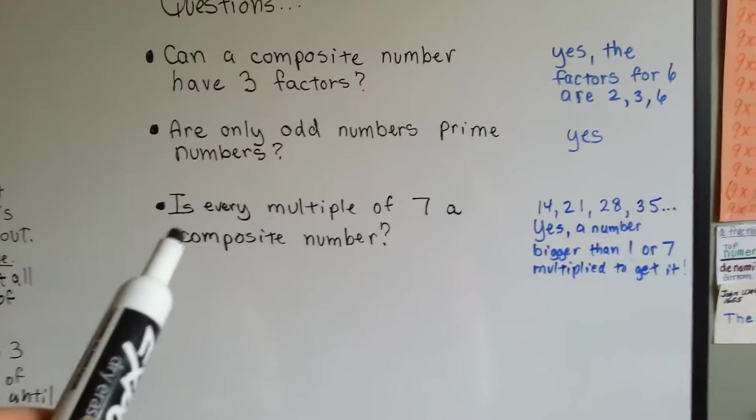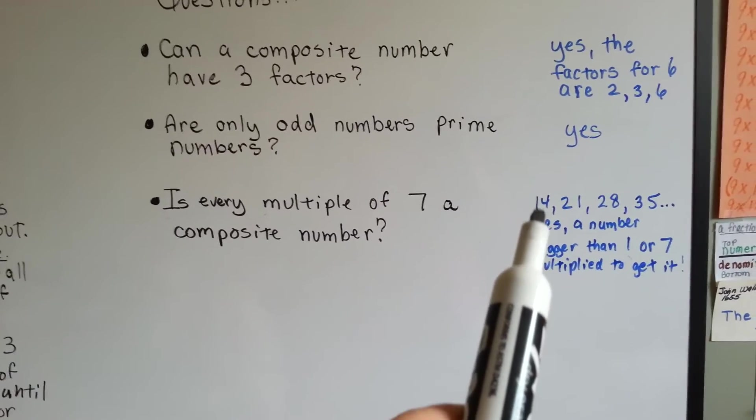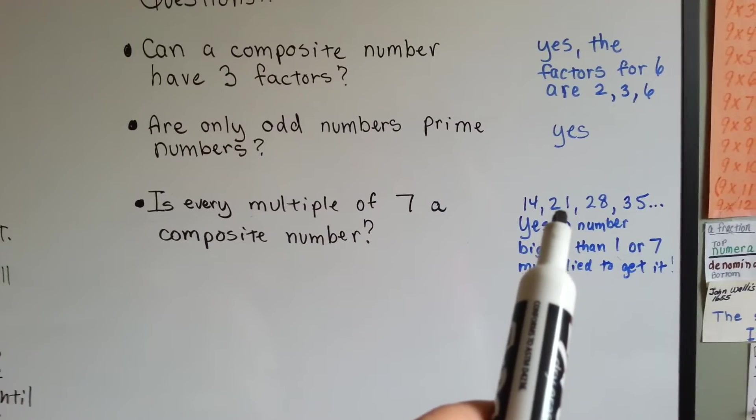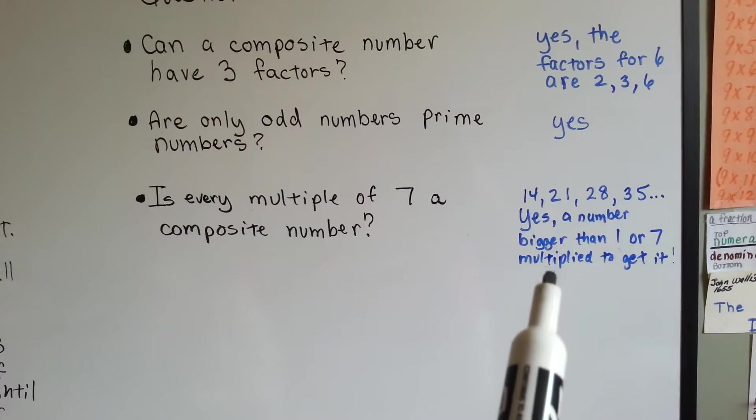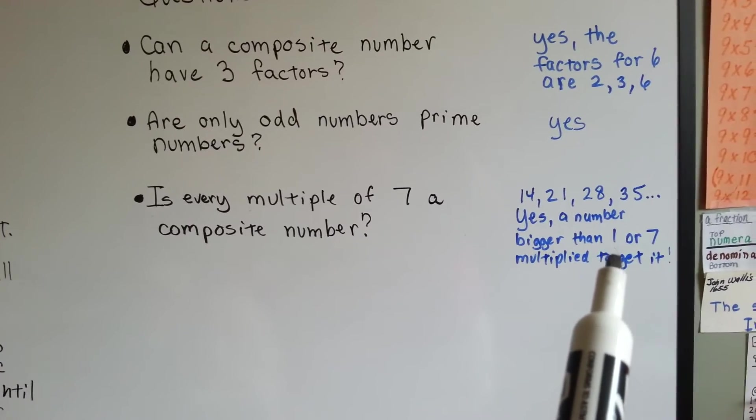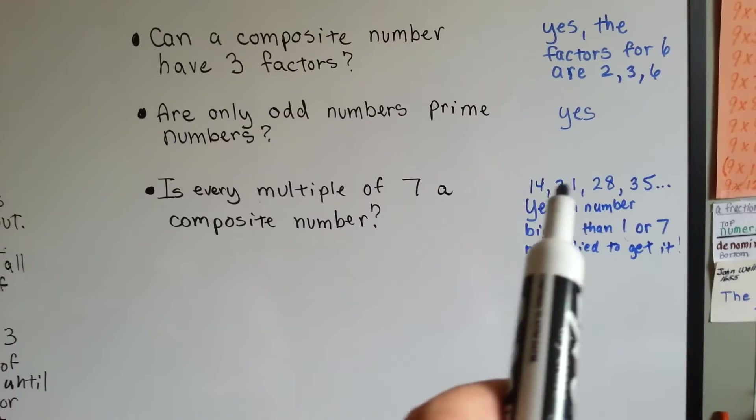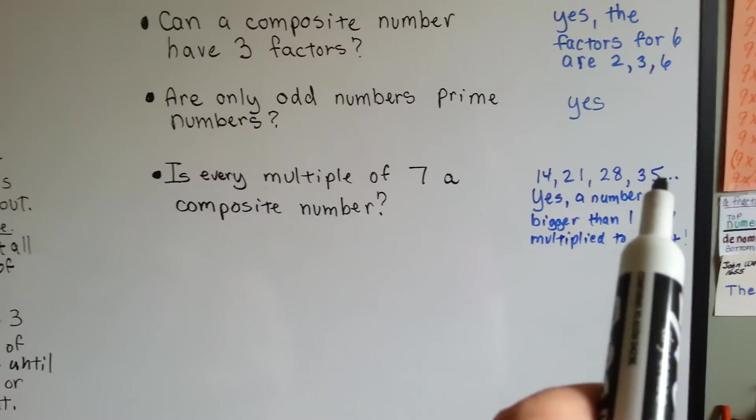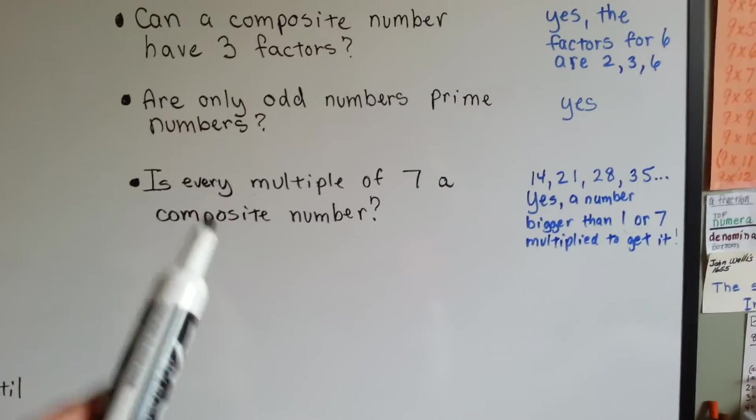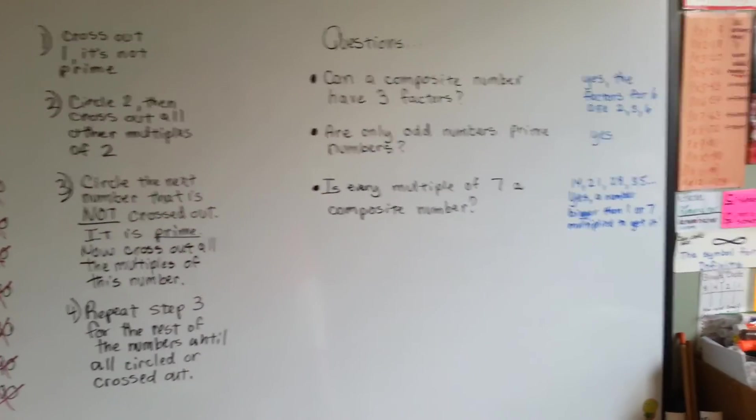Is every multiple of 7 a composite number? Well, 2 times 7 is 14, then 21, then 28, then 35. Yes, a number bigger than 1 or 7 is multiplied to get it. Because 7 times 2, 7 times 3, 7 times 4, 7 times 5. So because we're saying 2, 3, 4, 5, those are all numbers bigger than 1, and that ends up making it a composite number.